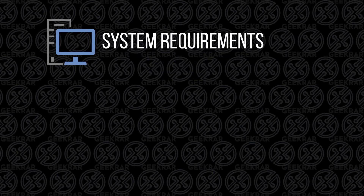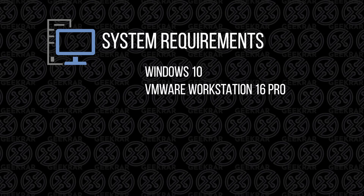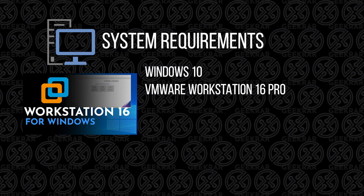Before we get started, let's take a look at the system requirements you're going to need. This installation is going to be done on a Windows 10 PC — I have Windows 10 and I've installed VMware Workstation 16 Pro. You can use previous versions like version 15 and the process will be fairly similar. If you haven't already installed Workstation Pro and you're looking to do that, you can check out this video and I'll walk you through those steps.